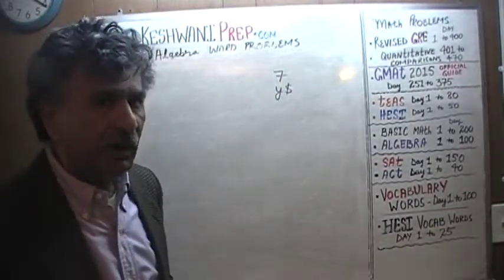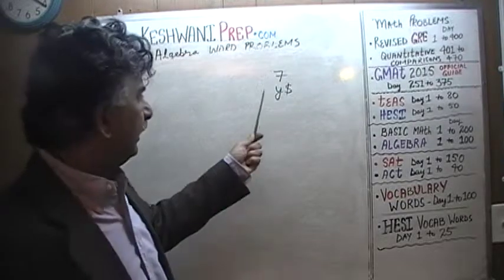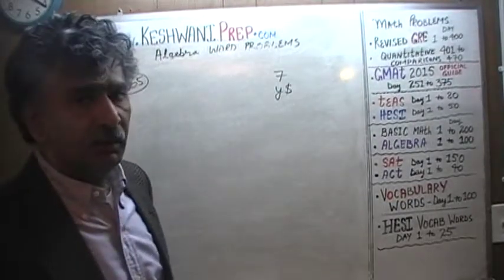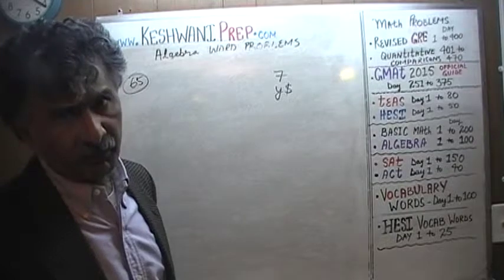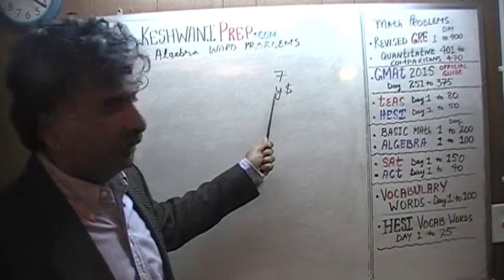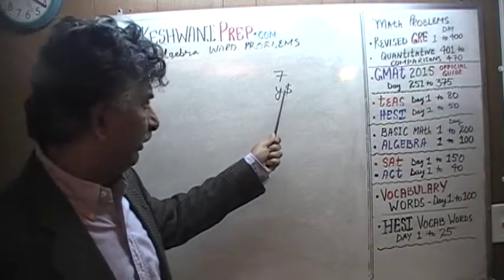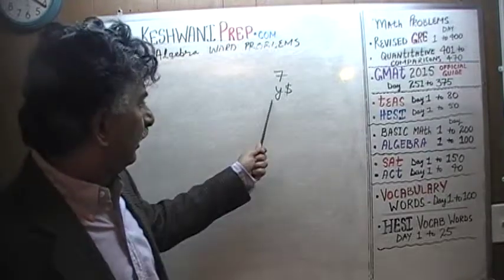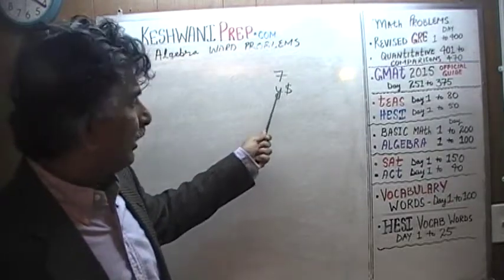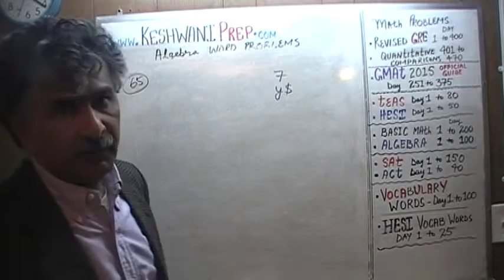In the language of algebra, we're dealing with an unknown quantity. Here, Y equals 7 — very simple, very straightforward. Y is some quantity; we don't know what it is. But it is some positive integer, because we're putting a dollar sign next to it. It's some quantity, whatever it is. If it happens to be 7, then Y is equal to 7.